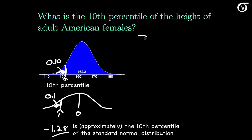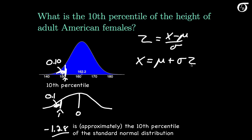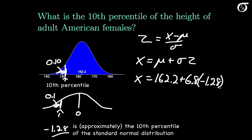Since Z equals (X minus mu) over sigma, we can rework this to see that X equals mu plus sigma times Z. So the 10th percentile of the distribution of heights equals 162.2 plus 6.8 times minus 1.28, which works out to approximately 153.5 centimeters. This value on the original distribution is approximately 153.5 centimeters, and the 10th percentile of the distribution of heights of adult American females is approximately 153.5 centimeters.